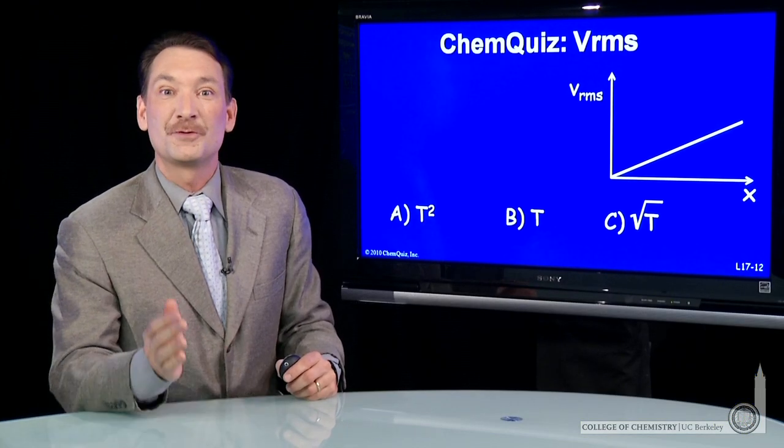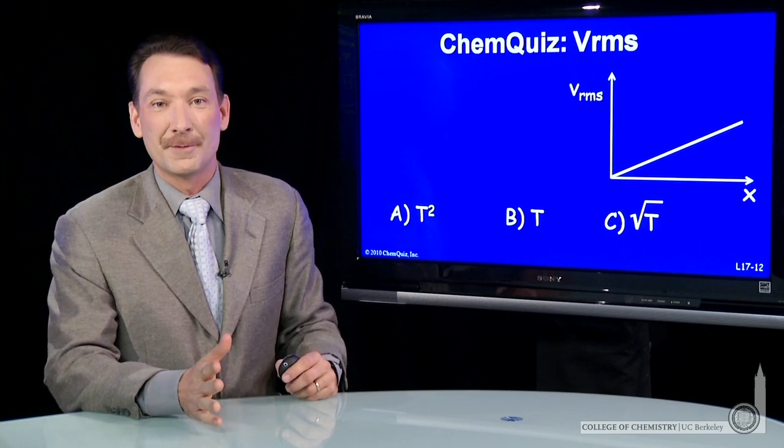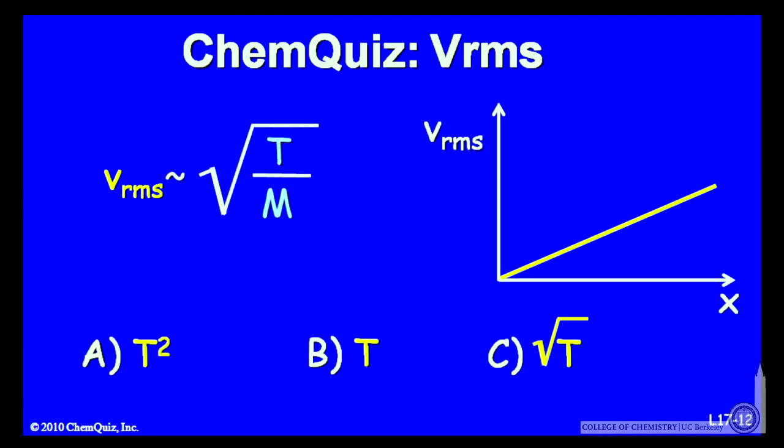We're talking about the relationship between the root mean squared velocity and the temperature. Now, we know the root mean squared velocity is proportional to square root T over the molar mass.